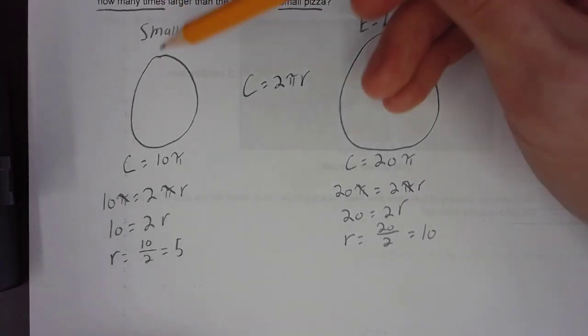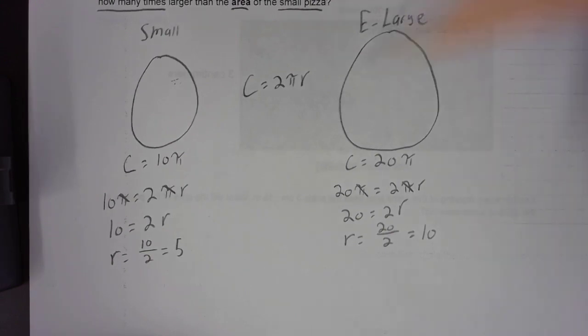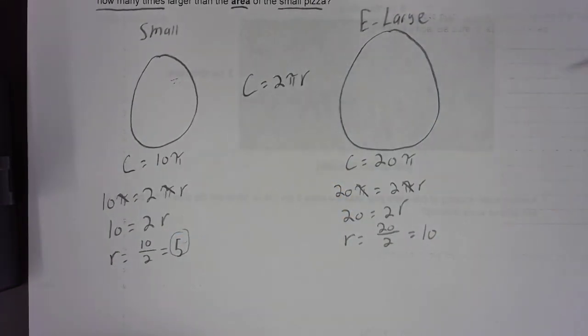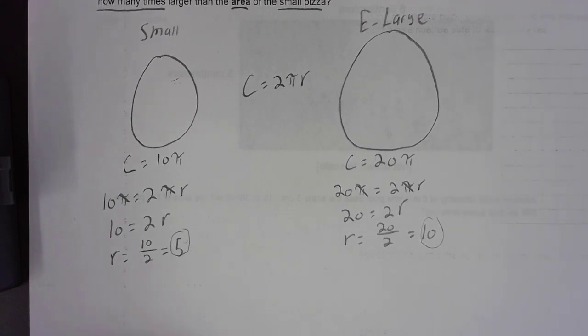So, the radius of our small circle, our small pizza, that is going to be 5. And the radius for our extra-large pizza, that is going to be 10. Now, the question is asking us, the area of the extra-large pizza is how many times larger than the area of the small?